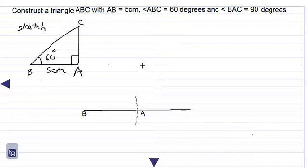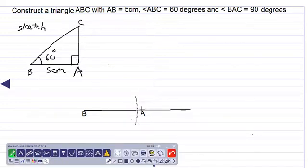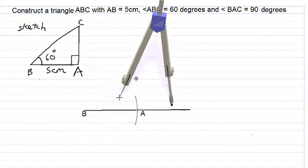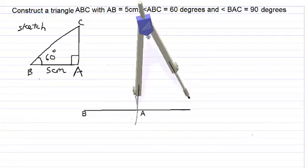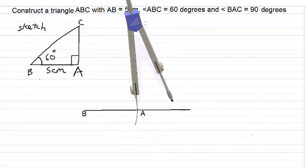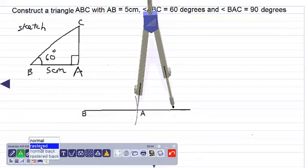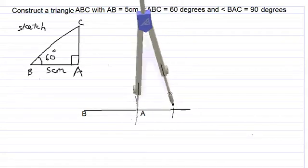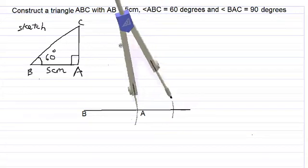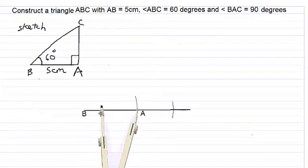Now we want to construct a 90 degree angle at point A, so we will take out our pair of compasses, place the point at point A. We want to draw construction arcs to cut on either side of point A. We use our lighter pencil again, swinging the compass around we cut on the other side.